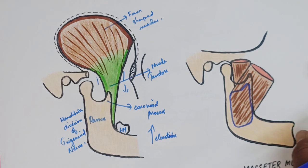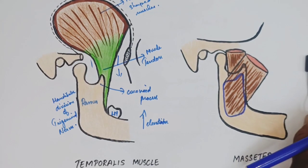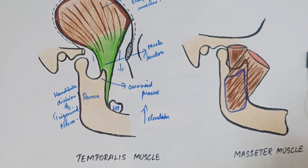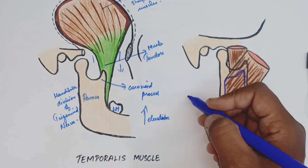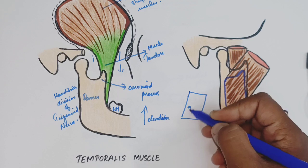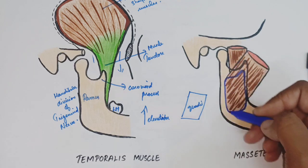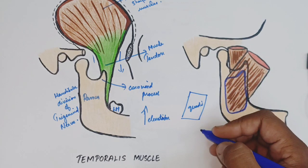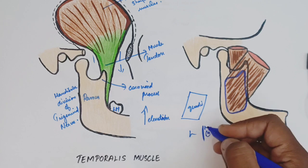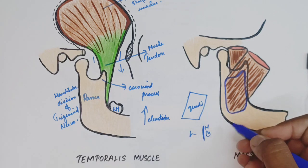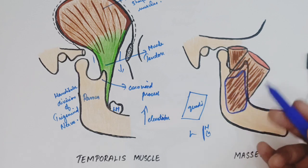In summary, the temporalis muscle is a fan-shaped muscle located in the temporal fossa. The masseter muscle is a thick quadrilateral muscle covering the lateral surface of the ramus of the mandible including the coronoid process. The ramus of the mandible is on the lateral side — the side opposite to the teeth — and the coronoid process is covered, but the condylar process is not covered and is left uncovered.